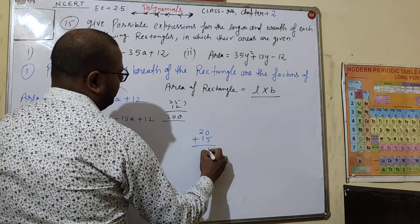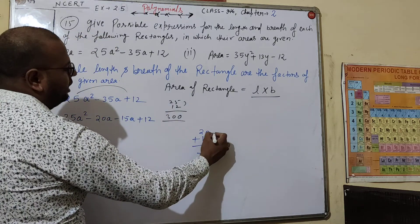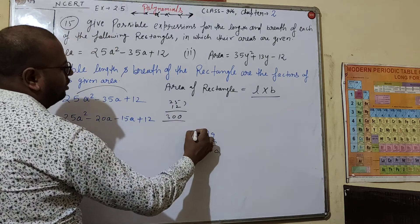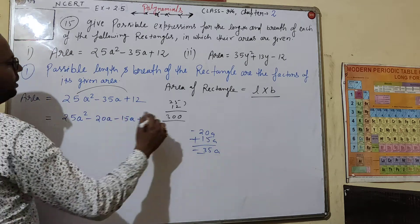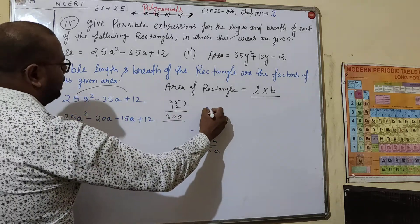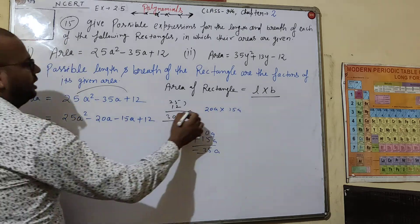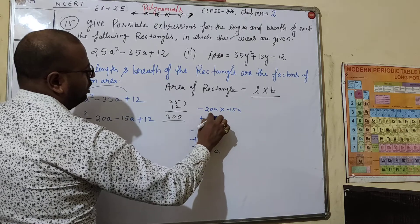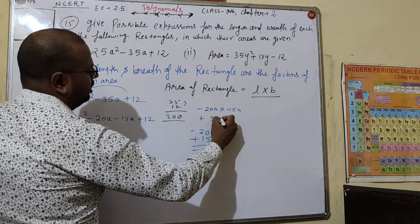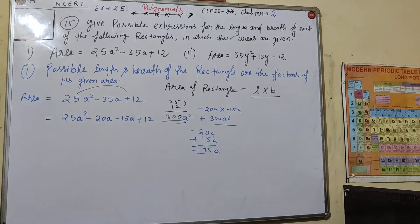So if we add the two split terms, it will give 25, and they must multiply to give 300. If a comes with a negative sign, it will be minus-minus which gives plus. To multiply this, we use 20a into 15a. Minus times minus is plus, and multiplying gives 300a squared. So our standard method confirms we are doing it correctly.